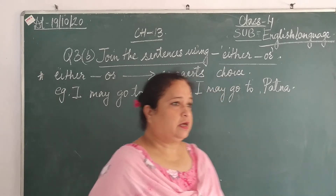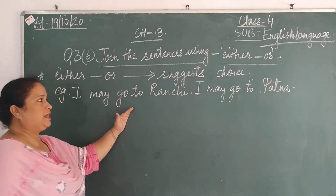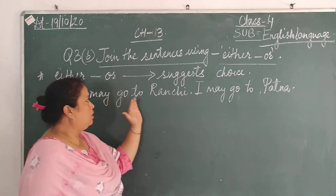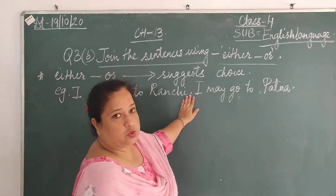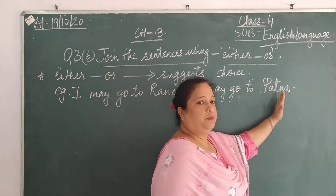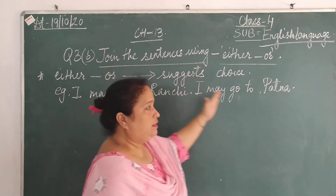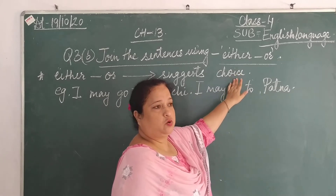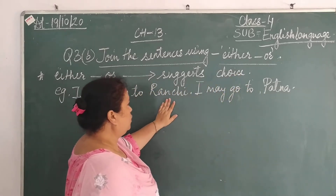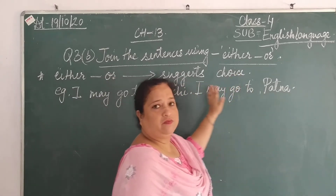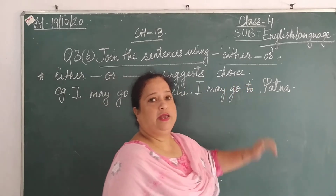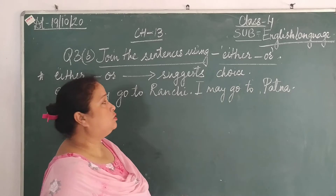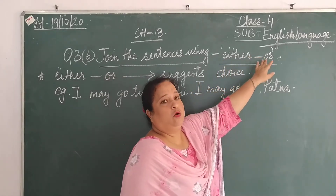So let us start by doing the first example. The first example says: 'I may go to Ranchi. I may go to Patna.' In this sentence you are given a choice — two places — and you are given a choice to go to any one of them. So how do we join these sentences using 'either...or'?